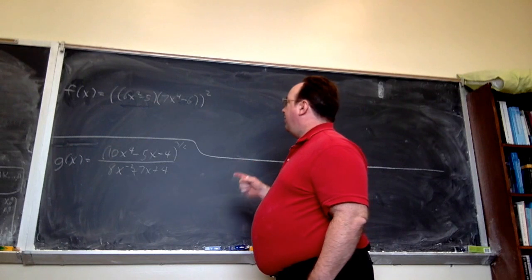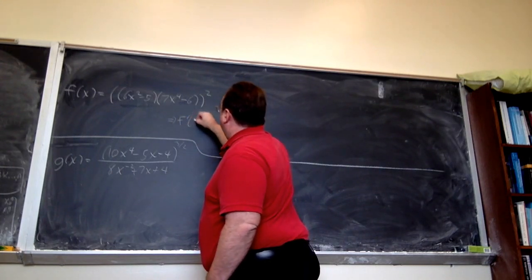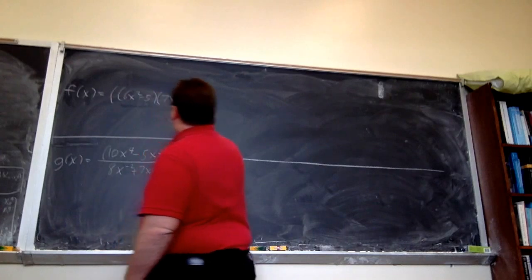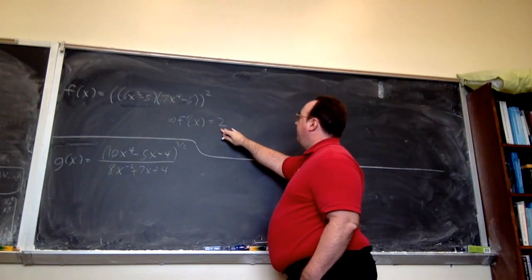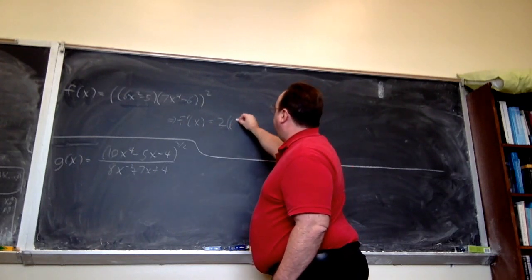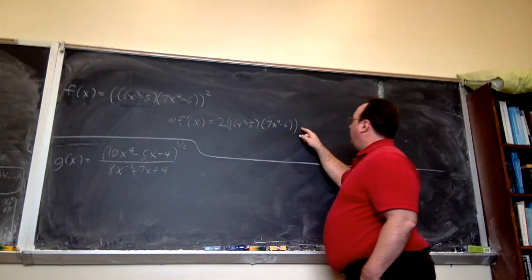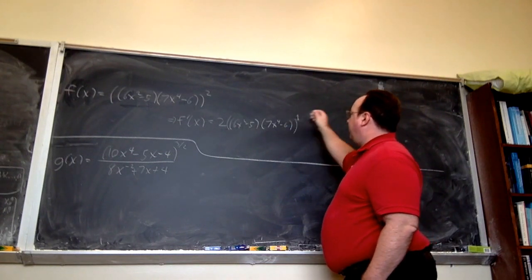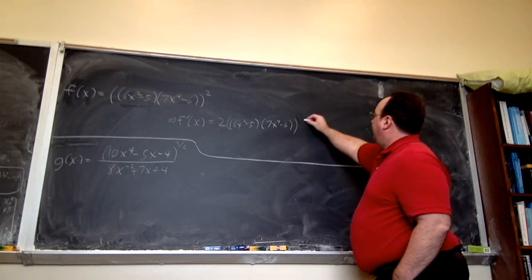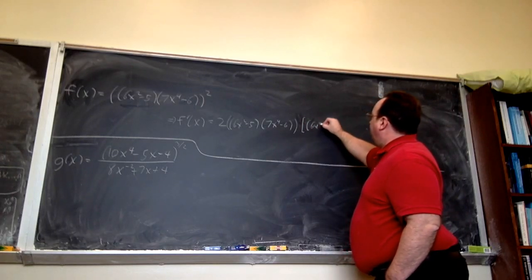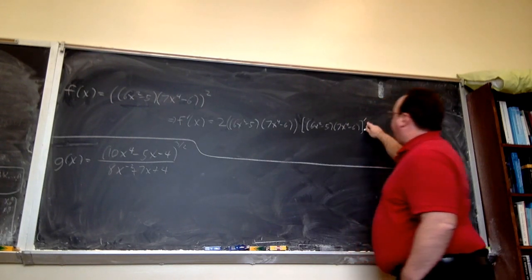So we have to use the general power rule first. f′(x) is going to be — using the power rule on everything inside squared — we bring the exponent down. We get a 2 times everything in those outermost parentheses, (6x² − 5)(7x⁴ − 6), raised to the 2 minus 1 power, which is the first power — but anything to the first power is itself.